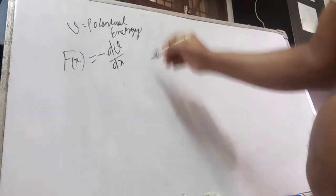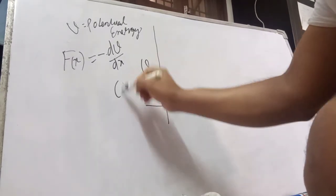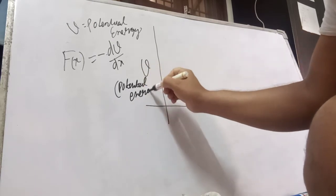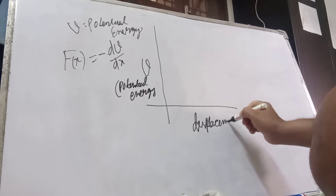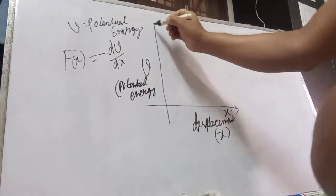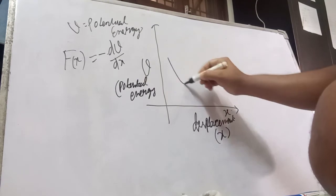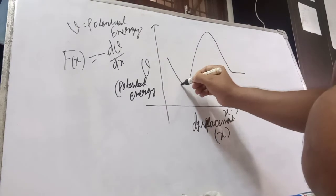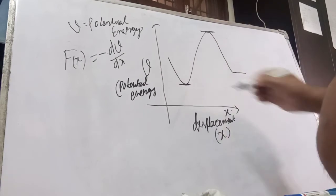So if you plot the graph between V, the potential energy, versus displacement x, suppose we have a graph like this. This is a minimum point and this is a maximum point.